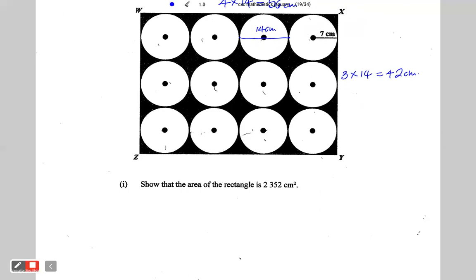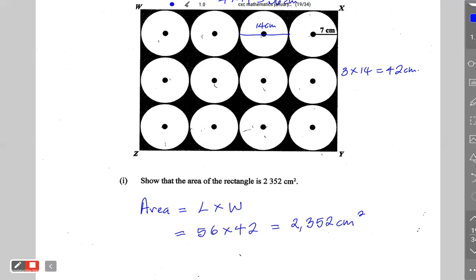Now the area would be length multiplied by width, which is 56 times 42, and that would be equal to 2,352 centimeters squared. Alright, so the first part of the question is finished.